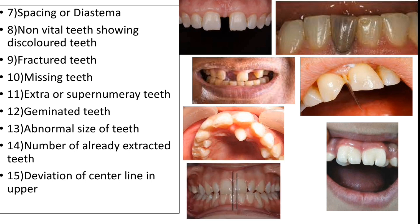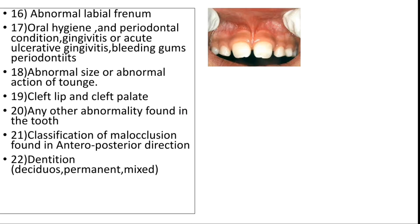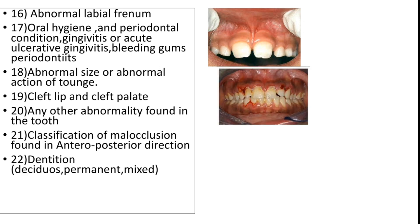The next important thing in internal examination is deviation of the central line. If there is deviation of the central line in the upper and lower arch, you can also note this in the internal examination.